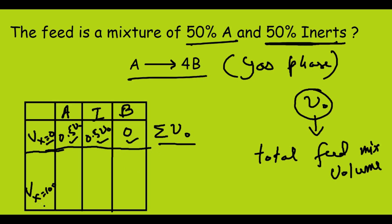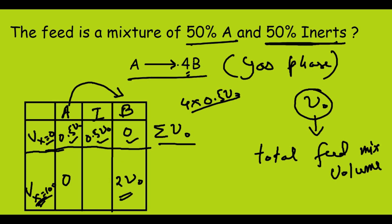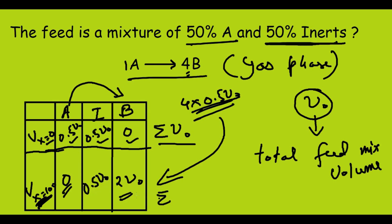At 100% conversion, all A is converted into B, so A becomes 0. For the reaction A giving 4B, from stoichiometry, 4 moles of B are produced per mole of A. So the volume of B will be 4 × 0.5V₀ = 2V₀. The inert remains the same at 0.5V₀ since it does not react. Taking the summation: 0 + 2V₀ + 0.5V₀ = 2.5V₀.